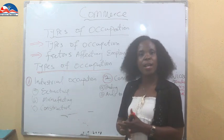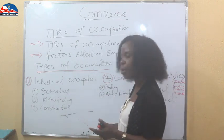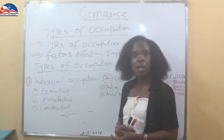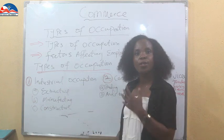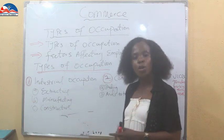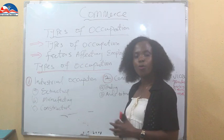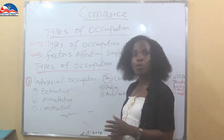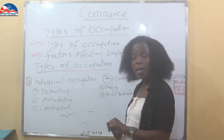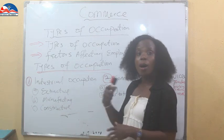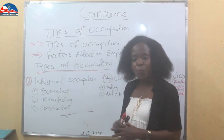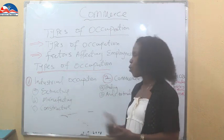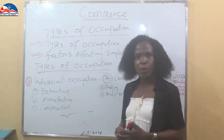We also have farmers — large scale and small scale farmers — all falling into the extractive industry. Then we have the manufacturing industry: those who use raw materials to produce finished products for us, manufacturing from the natural states of products. Those who produce food for us, like garri, semo, and our beverages — it is natural things they use to turn into finished products for us.